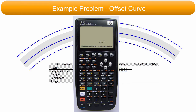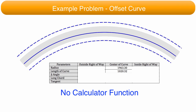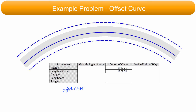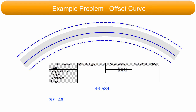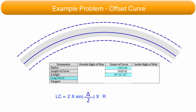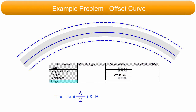Most calculators have a function to convert between decimal parts of a degree and degrees, minutes, and seconds. If there is no calculator function, the conversion is done by removing the integer value to get whole degrees, multiplying the fractional part by 60 to get whole minutes, then multiplying the remaining fraction by 60 to get seconds. The delta angle answer is placed in the table. The long chord distance is found by placing the radius and delta angle in decimal degrees into the long chord equation, and the result is placed in the table. The tangent distance is found similarly and also placed in the table.